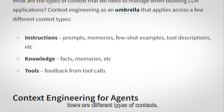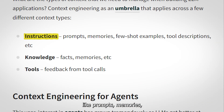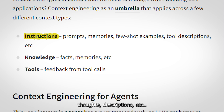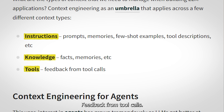According to LangChain, there are different types of contexts. First, instructions — like prompts, memories, few-shot examples, tool descriptions, etc. Second, knowledge — like facts, memories, etc. Third, tools — including feedback from tool calls.